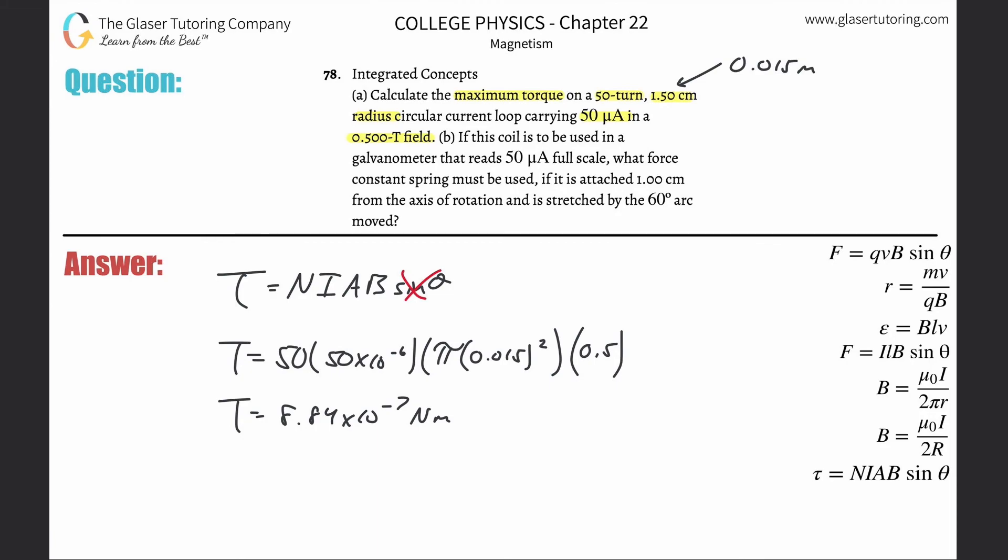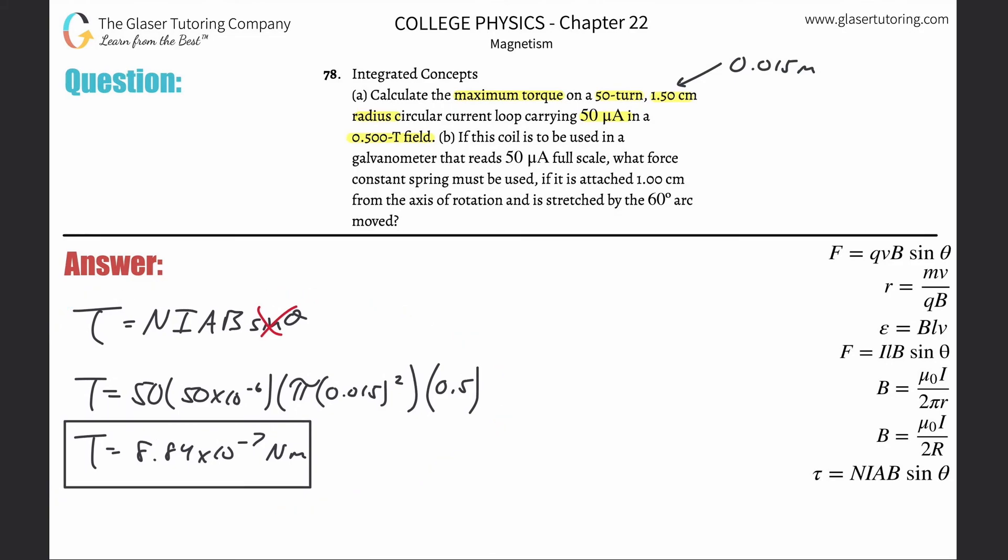Now for letter B, it's asking if this coil is used in a galvanometer that reads 50 microamps full scale, what force constant spring must be used if it is attached 1 centimeter from the axis of rotation and stretched by a 60 degree arc? We need to somehow relate this torque to a spring constant or force constant.